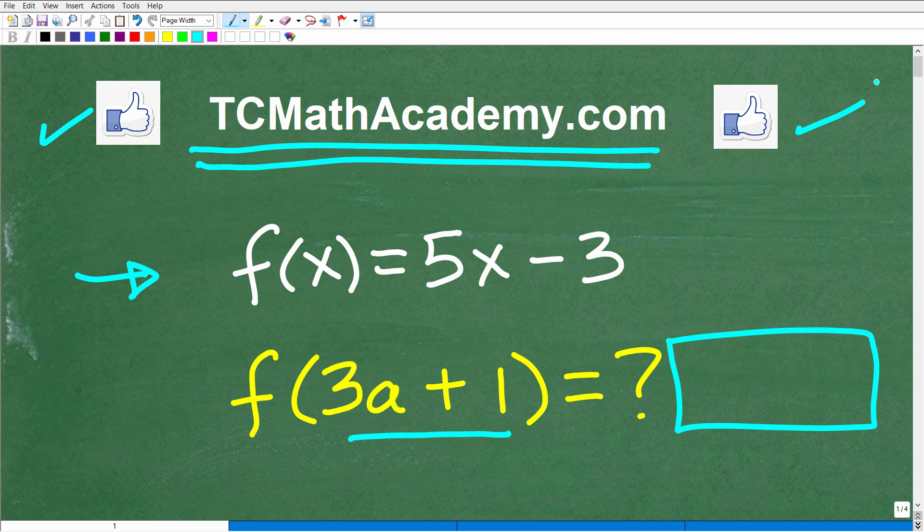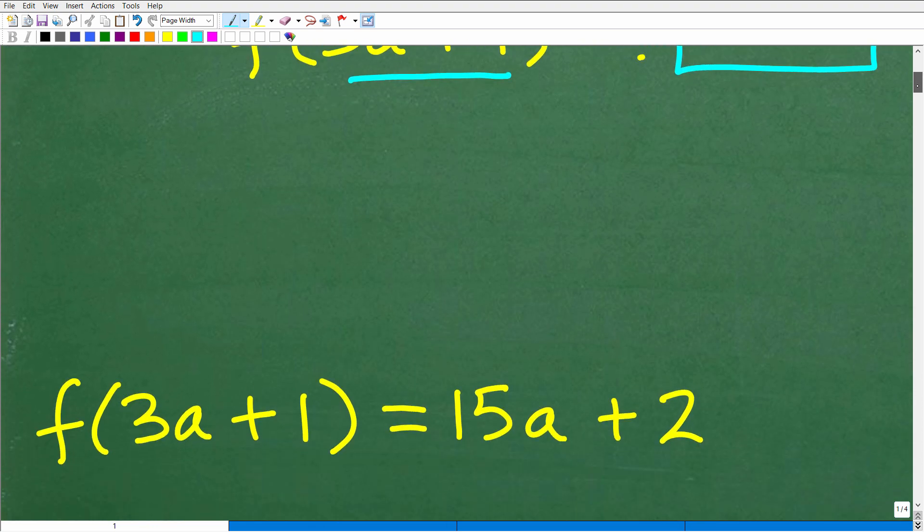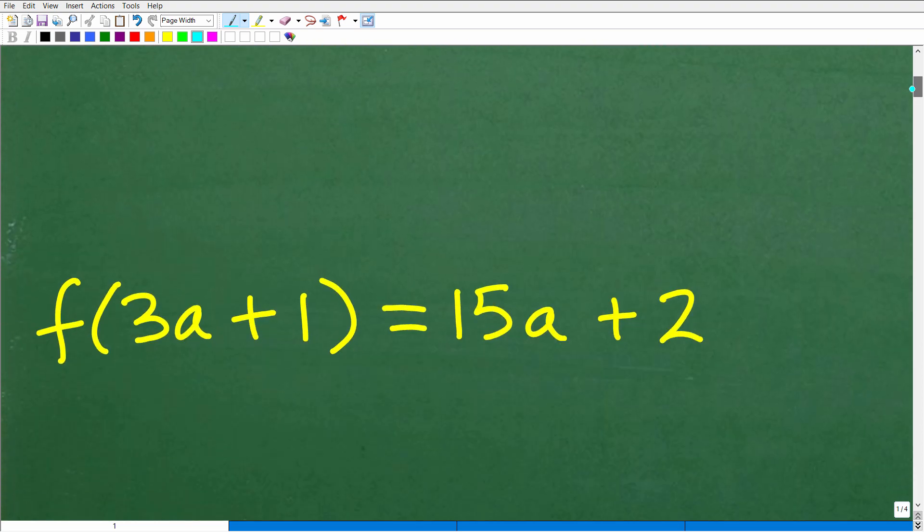Okay, so let's go take a look at the answer here. So again, given the function f(x) is equal to 5x minus 3, what is f of 3a plus 1? Well, the answer is the following. f of 3a plus 1 into this particular function would be equal to 15a plus 2.